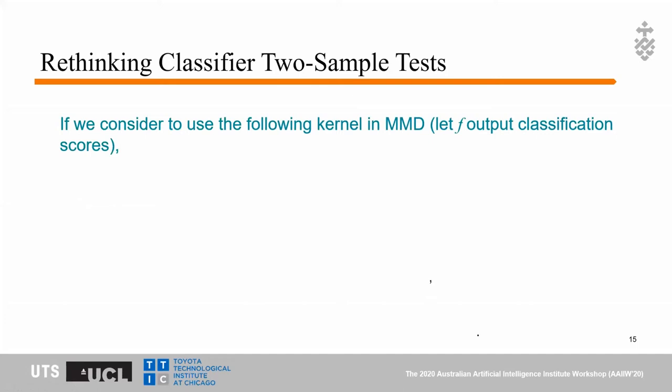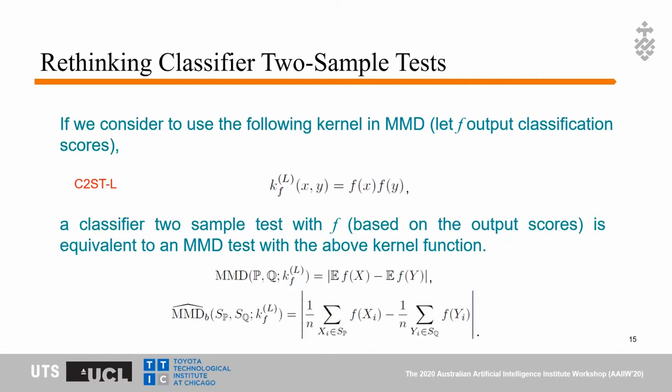Similarly, if we use a linear kernel, we prove that C2ST with scores, called C2ST-L, is also equivalent to an MMD test with this linear kernel. This means that the classifier two-sample test is a special case of the MMD test. So if we want to develop more powerful two-sample test methods, we need to focus on how to improve the MMD test.